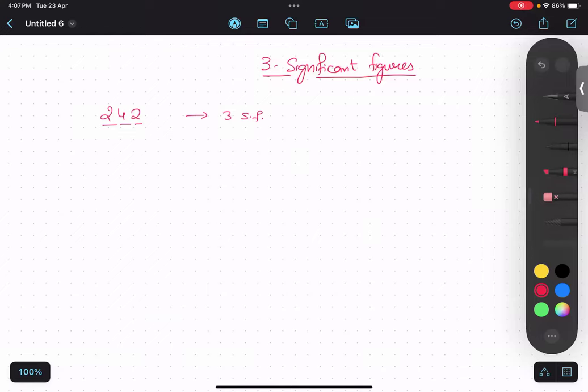Now, for example, 007. What do you think it is? It is nothing but seven. So it is one significant figure. Understood?